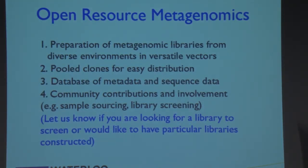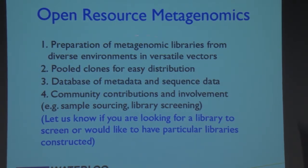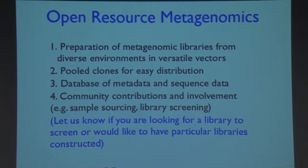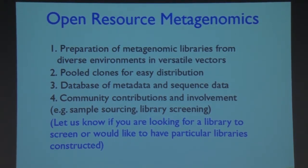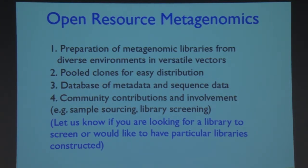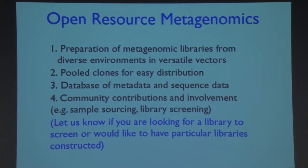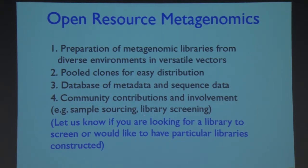Basically, we make metagenomic libraries from diverse environments — lots of soils predominantly, but also other things. We pool the clones, mix them together, and freeze them. We maintain databases that include all the metadata: the physical and biological characteristics of the environment, where samples were taken, and DNA sequence information so you know what types of organisms and genes to expect. We also involve the scientific community in obtaining samples and screening the libraries for different functions.